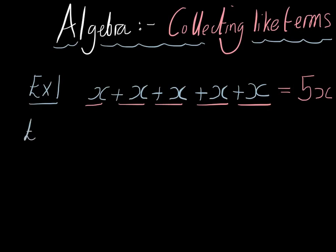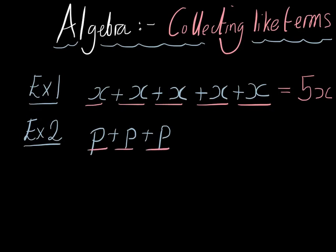Example 2. In algebra any letter is usable, so it doesn't always have to be x's. So say we had for example p plus p plus p. How would we simplify this? Well we have 1p, plus 2p's, and then plus another p is equal to 3p.